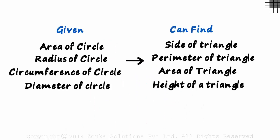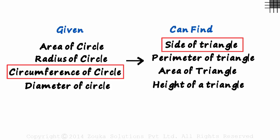If you are given any of these, you can find any of these. If you know the area of the circle, you can find the height of the triangle. Or if you know the circumference of the circle, you can find the side of the triangle.